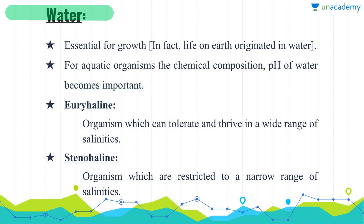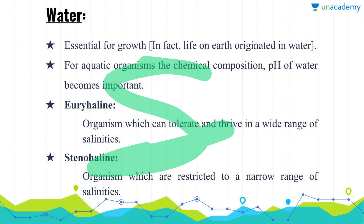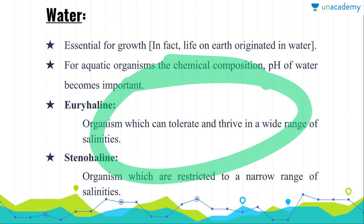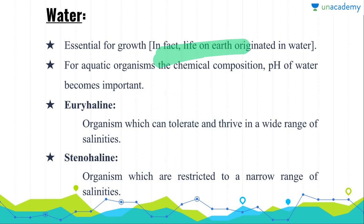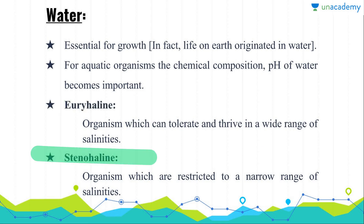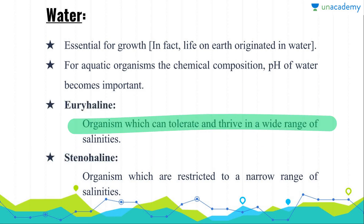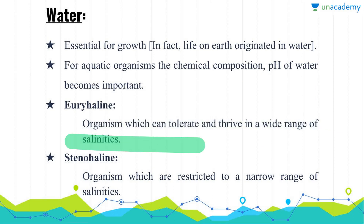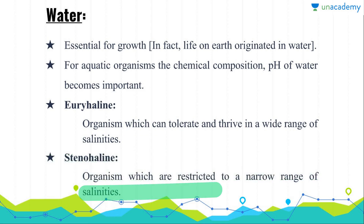Whenever we talk about water, on the basis of salinity: in the case of inland water we have salinity up to 5 ppt; in the case of sea water we have salinity of approximately 35 ppt; and in the case of hydrothermal vents we have salinity of more than 100 ppt. Due to this variation in salinity, we can classify organisms into two categories: euryhaline, which can tolerate and thrive in a wide range of salinity, and stenohaline, which are restricted to a narrow range of salinity.